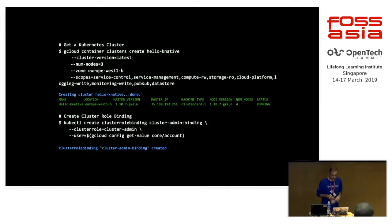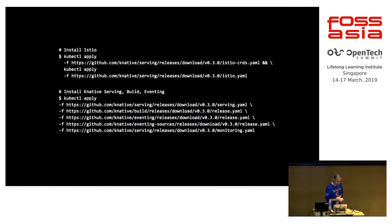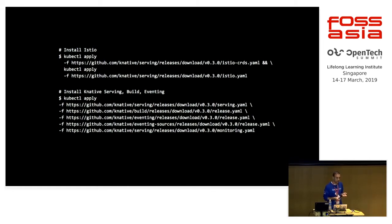The whole thing runs on Kubernetes. To use Knative, first you need a Kubernetes cluster — it doesn't have to be on Google Cloud, it can be any regular Kubernetes cluster. Once you have your cluster, you create a cluster role binding needed for Istio, then you install Istio. In Google Cloud you can get a Kubernetes cluster with Istio with a single command. Then you install Knative — serving, build, and eventing are separate, so you can install them one by one or all at once.